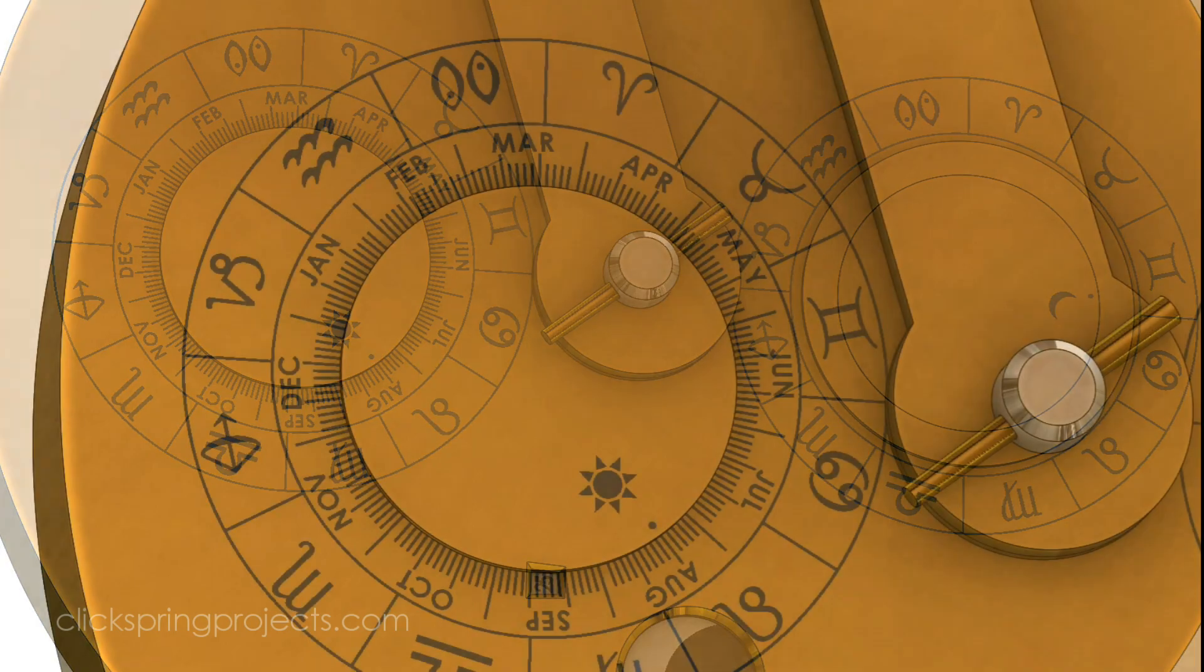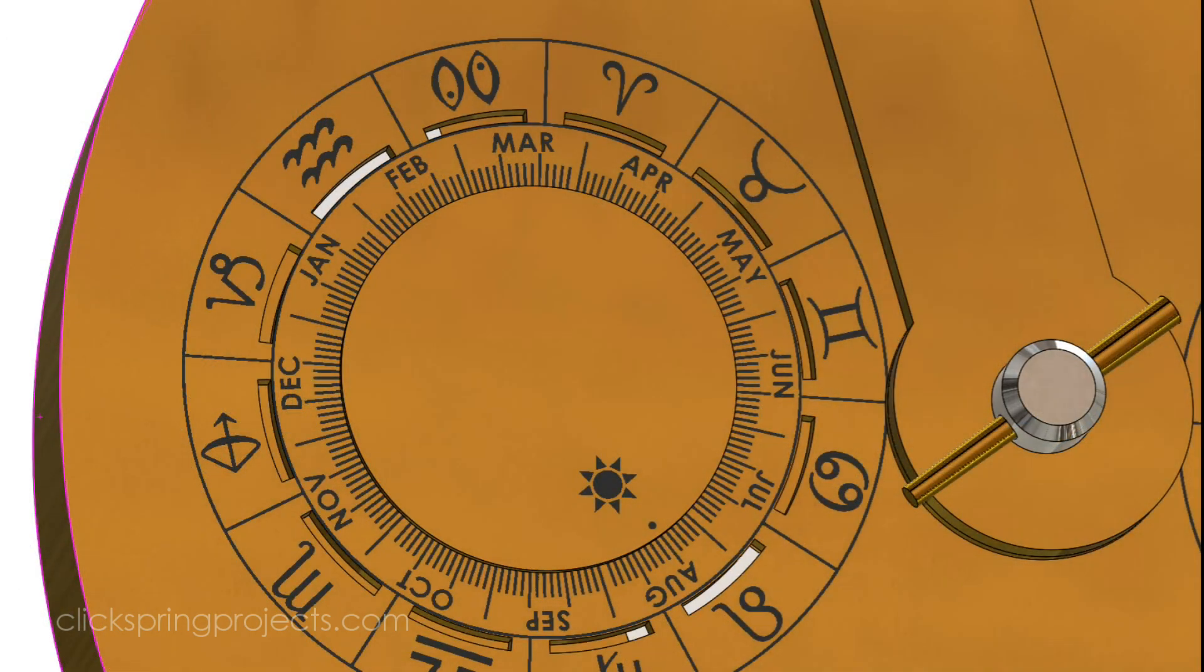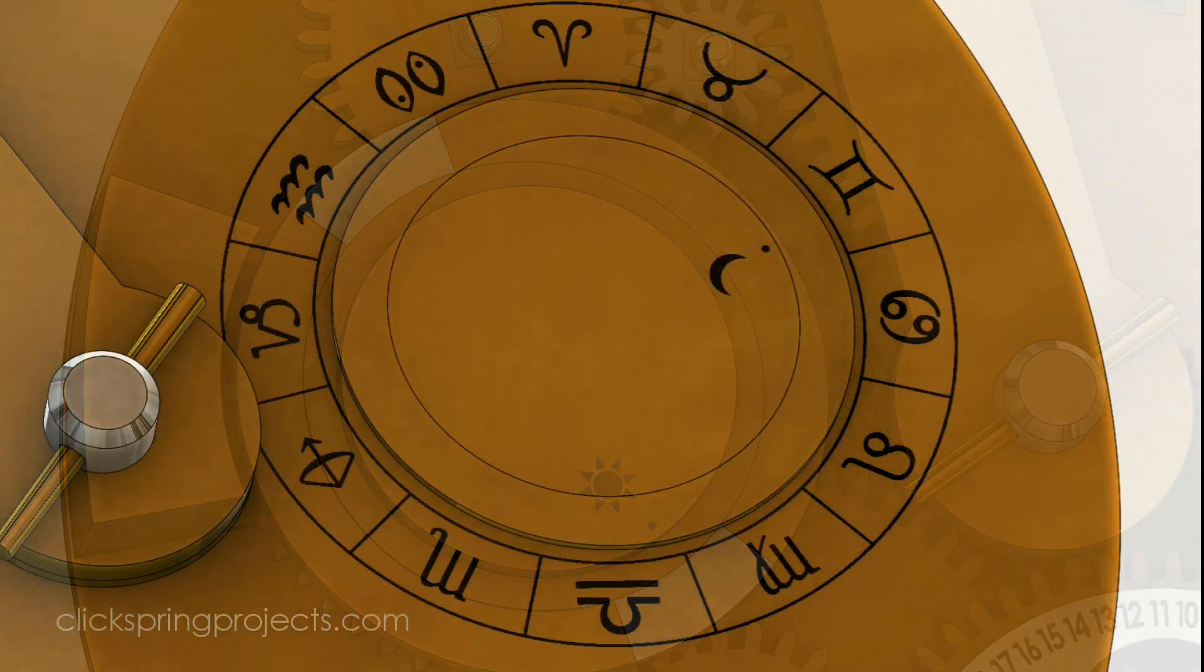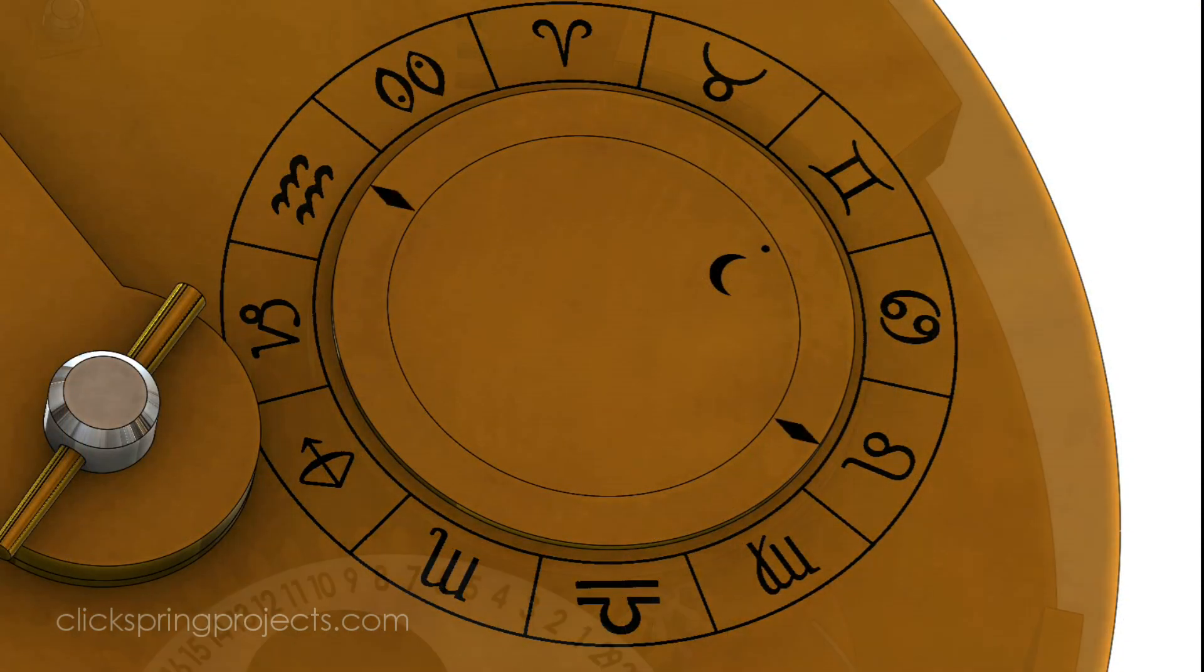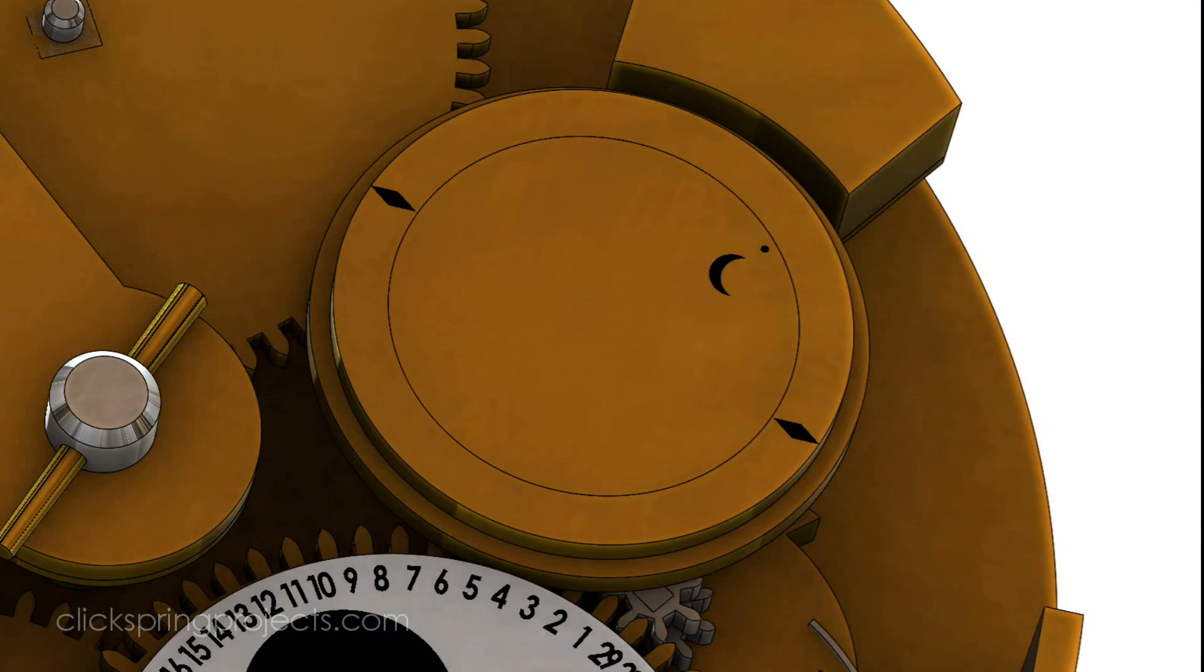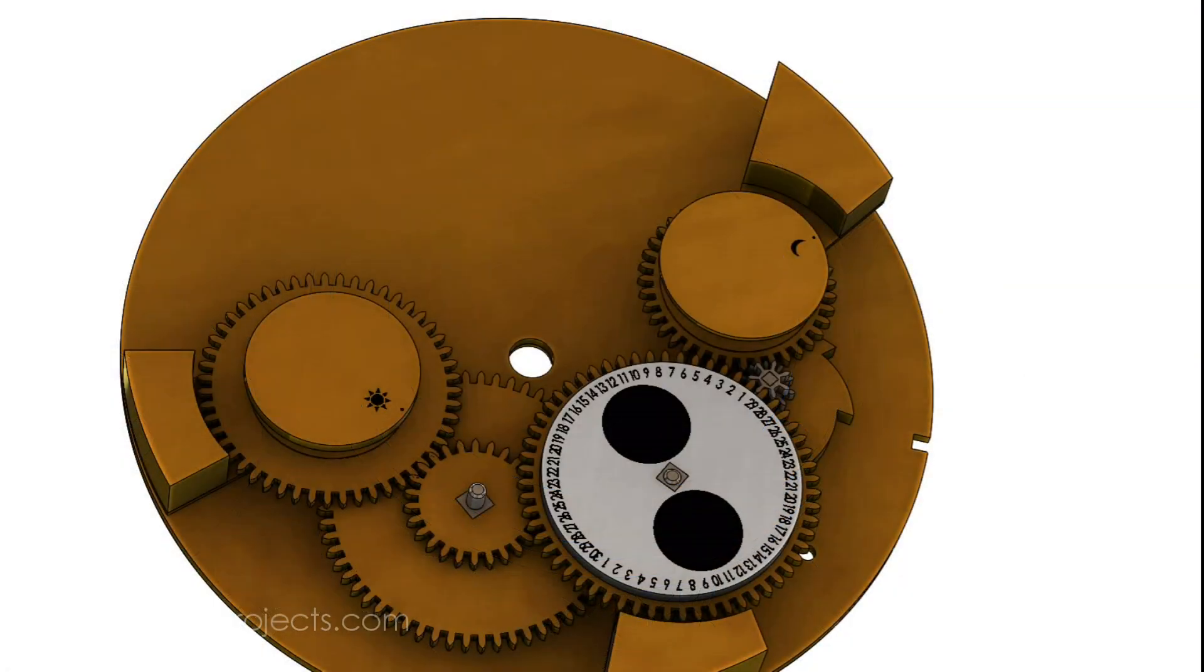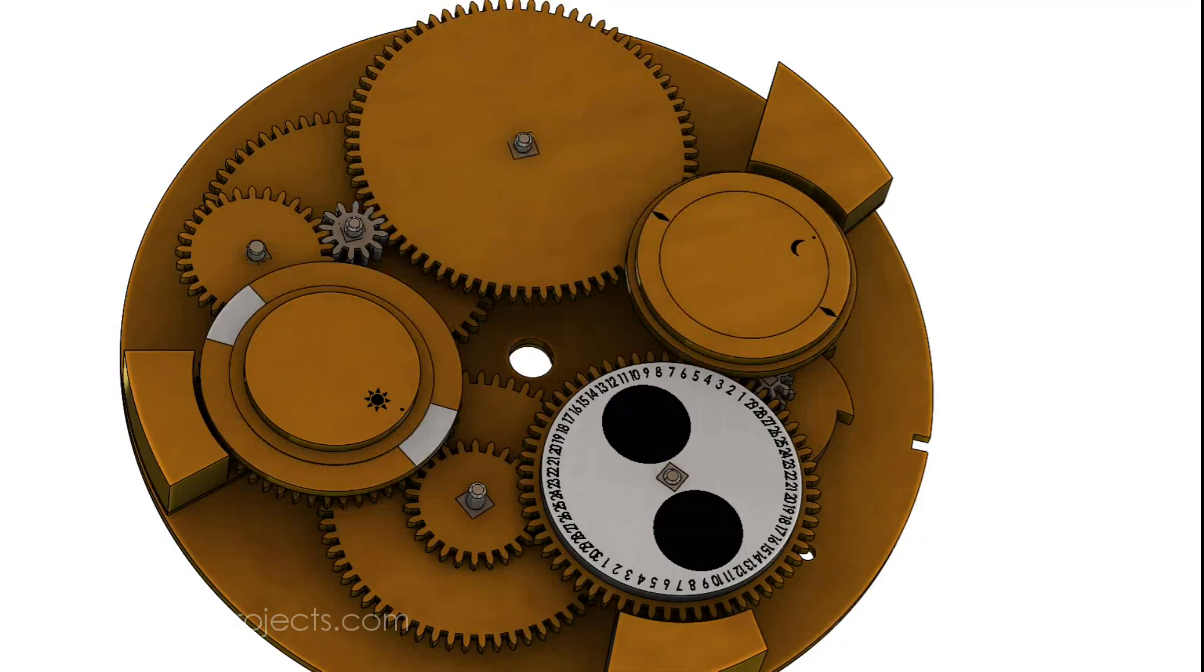But it's important to note, there's no eclipse prediction gearing in the original device, only calendrical information was displayed. In the course of his research, Wright briefly discussed the possibility that with a little more fabrication work, this device could have been turned into a compact eclipse prediction machine. So that's what I've done with this project.